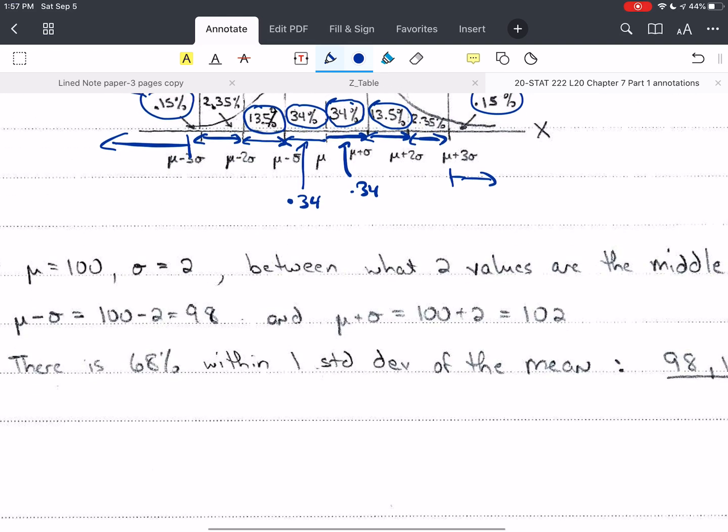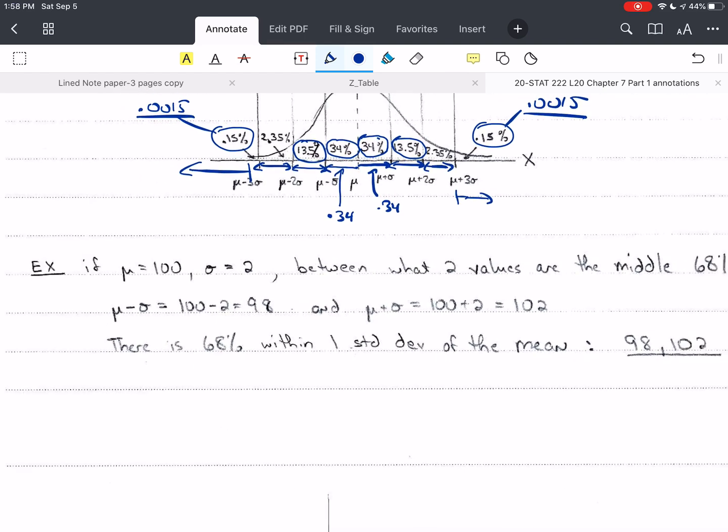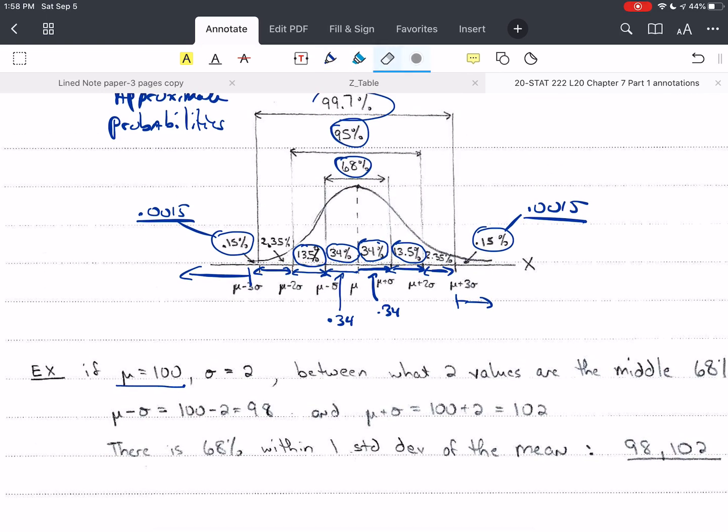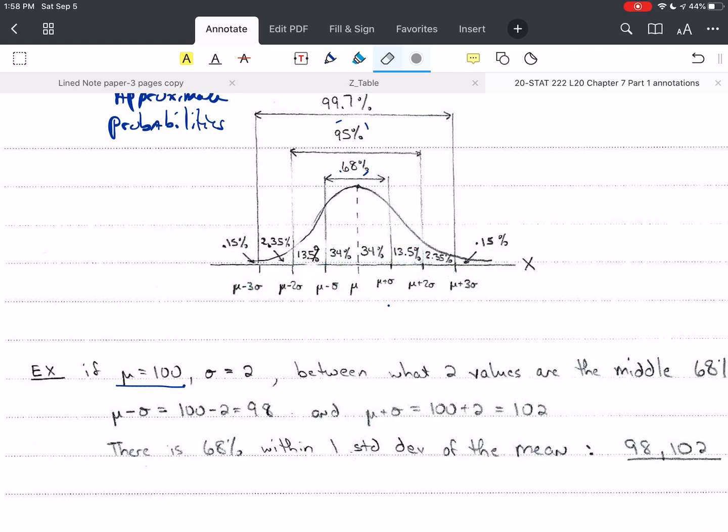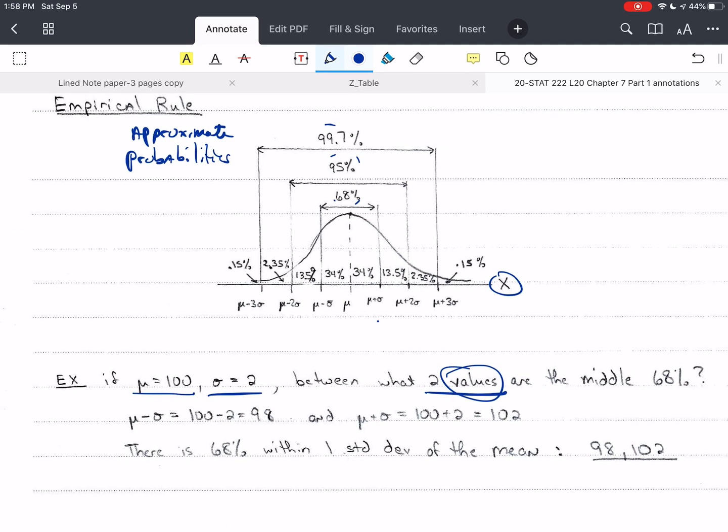So let's do a quick example here and finish up section 1. So if mu is 100 and sigma is 2, so the mean is 100, the standard deviation is 2, between what two values? I'm asking for values. And remember, I'm using x as our values. Between what two values are the middle 68% of the population?